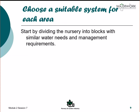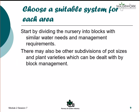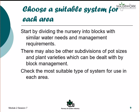The starting point for irrigation design is the division of the nursery into a number of blocks that have similar water needs and management requirements. It's possible to combine several system types in the one nursery. Once the divisions have been identified, investigate the most suitable type of system for use in each area.